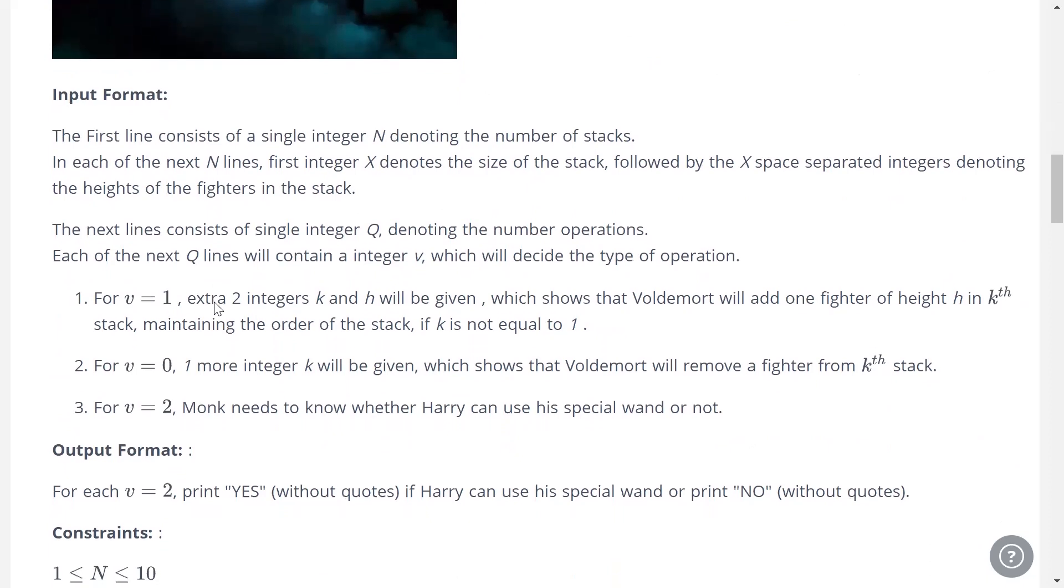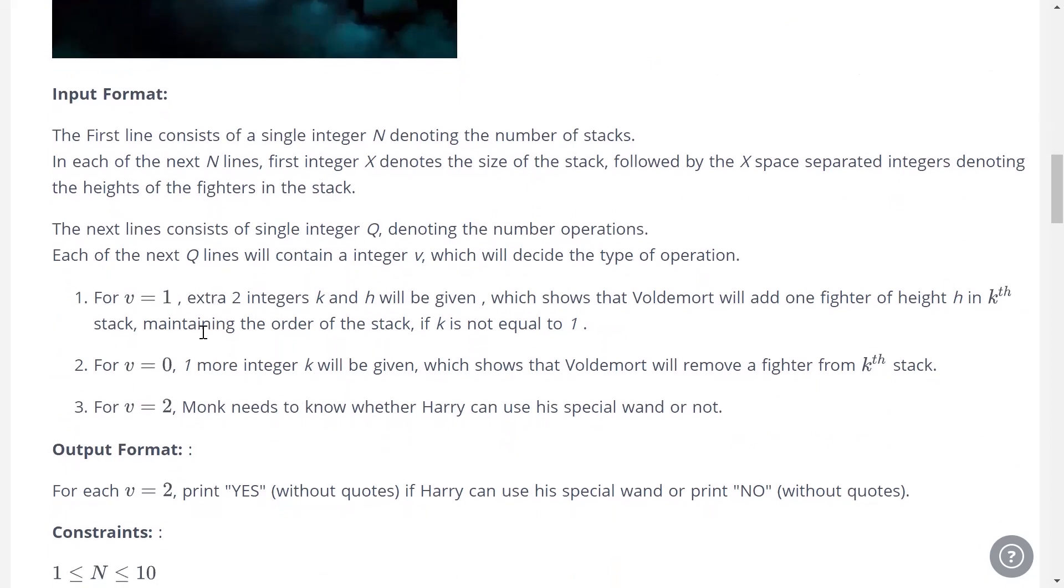Here is our input format. We have got three possible inputs. Whenever v equals 0, you will get another number indicating the row number. That means Voldemort is removing a fighter from the end of that row. V equals 0 is basically a pop operation. V equals 1 is a push operation. You will be given two integers: one is the row number and one is the height of the fighter himself. That fighter will go to the end of that row.